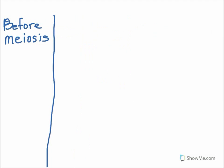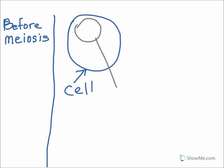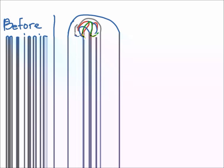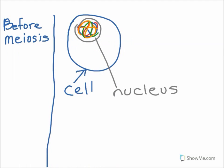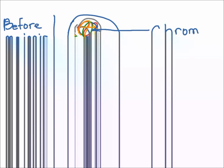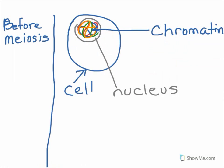But how does this actually happen inside the cell? Well, before meiosis, we have the cell. And inside the cell, we have a nucleus. And inside the nucleus, we have our DNA. And when the cell is resting before meiosis, the DNA is loose and uncoiled. It doesn't look like chromosomes. It's just relaxed inside the nucleus. When the DNA is loose and uncoiled, we call it chromatin.